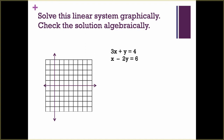For the first one, we're going to move the 3x over and we get y equals negative 3x plus 4. So we have our y-intercept at 4, and we're going down 3 over 1 repeatedly, and we have a line going through our points.